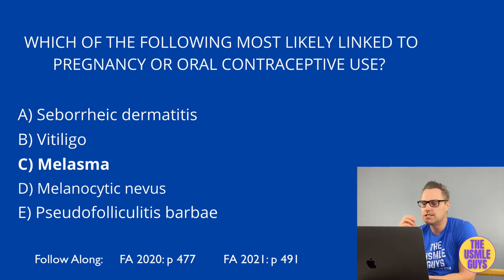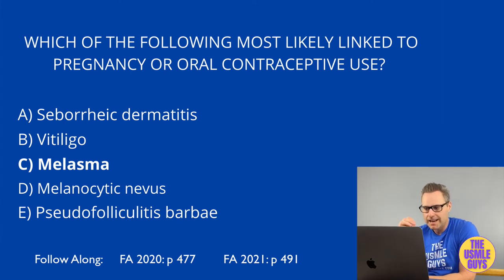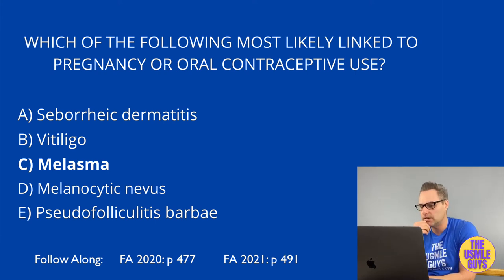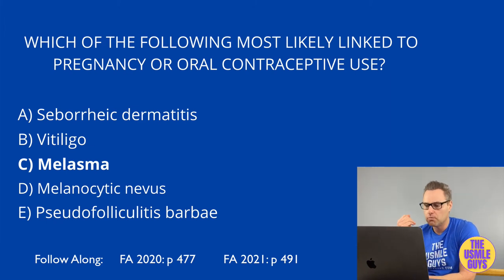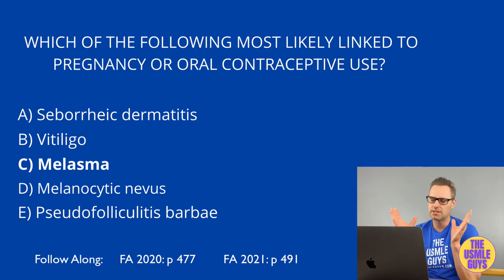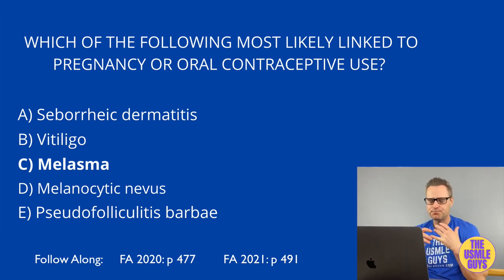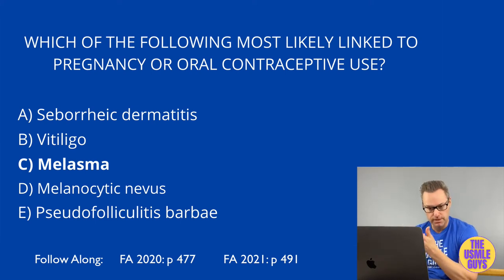The gene affected in oculocutaneous albinism is the OCA genes. People who inherit this condition end up with a decrease in melanin production as a result of decreased tyrosinase activity or a defect in tyrosine transport. This patient has a much higher risk of skin cancer because they lack pigment, so aggressive sun protection is essential.